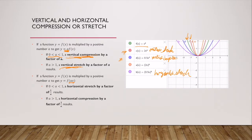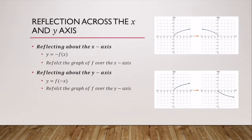A value between 0 and 1 inside the argument kind of pushes the graph down towards the x-axis. If I have a horizontal compression, that means we're growing faster vertically than horizontally, and that's when we put a value like 2 inside the argument — that's a horizontal compression.